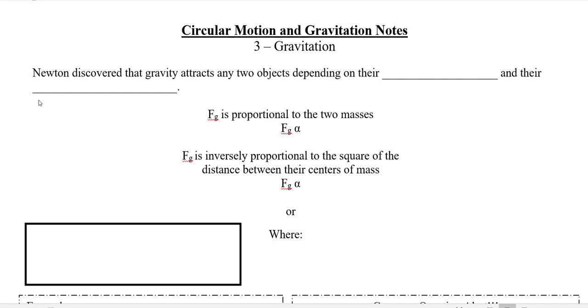So Newton discovered that gravity attracts two objects depending on their masses and their separations. Fg is proportional to the two masses, m1 and m2, whereas it's inversely proportional to the square of the distances between their centers of mass, or 1 over r squared. So the bigger an object is, the more gravitational attraction you would feel towards it. The separation is going to matter more because the r value is squared. For example, the Sun is far more massive than the Earth, but we're more attracted to the Earth because we're so much closer to it.